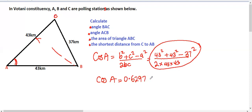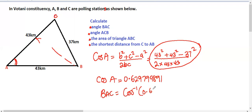...approximately 0.629799819. Now, to get the value of the angle, angle BAC = cos⁻¹(0.629799819). When you press this on your calculator, you should be getting 51 degrees.